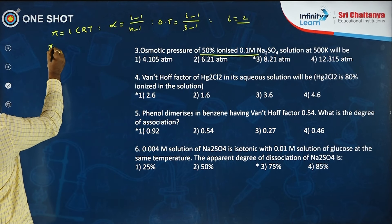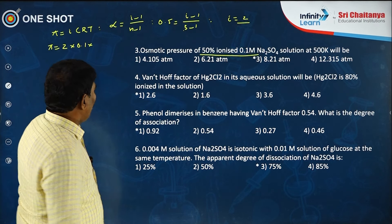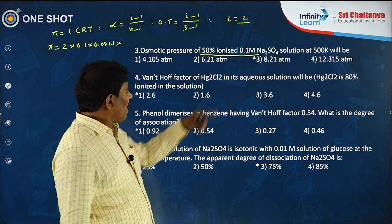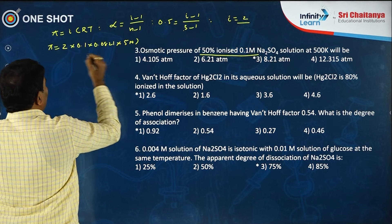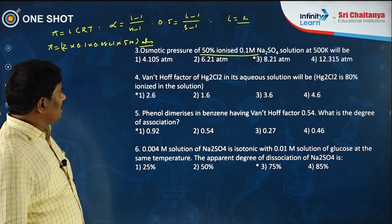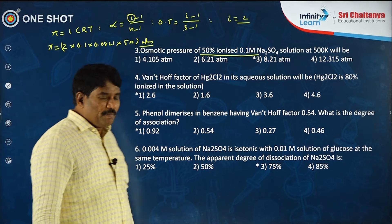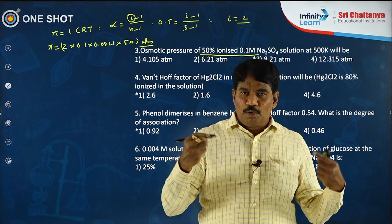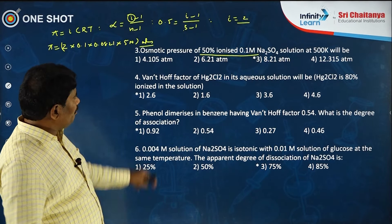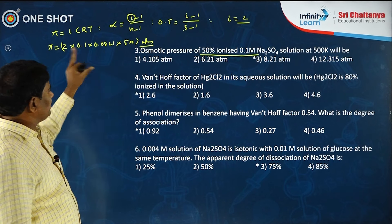Then π = 2 × 0.1 × 0.0821 × 500 atmospheres. The key point: if a problem does not mention percentage of ionization, assume 100% ionized and i equals the number of ions given by one molecule. If percentage of ionization is mentioned, calculate i using α = (i−1)/(n−1) and substitute that i value.